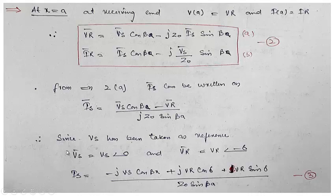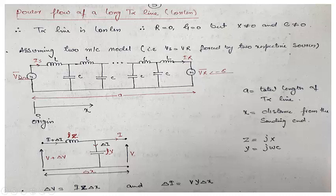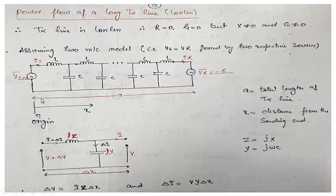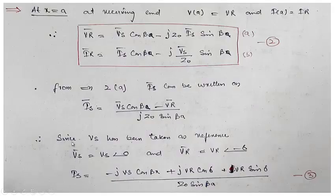As stated at the beginning, Vs is taken as a reference, and since power flows from sending end to receiving end, the real power flows from sending to receiving end, meaning Vs must be leading. So there must be some angle delta, and VR lags Vs by delta. That is why VR is shown with angle minus delta. Taking Vs as reference, Vs equals Vs at angle 0, simply equal to Vs, and Vr equals Vr at angle minus delta, which in rectangular form equals Vr·cos(δ) minus j·Vr·sin(δ).